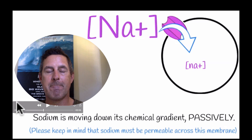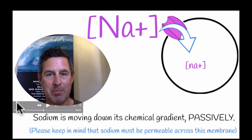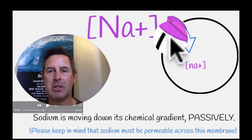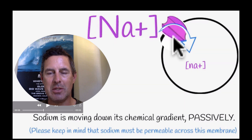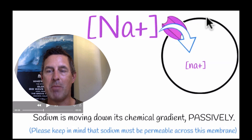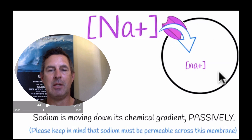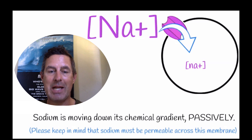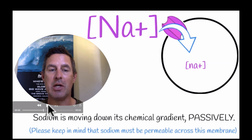Just so we're clear, sodium, which is a charged atom, requires a channel protein to move into the cell. And that's what I'm showing right here in pink. This is a protein channel that sodium must move through to get past the phospholipid bilayer of this cell membrane. Nonetheless, as long as that channel is there and open, sodium will move down its gradient from an area of high concentration to an area of low concentration.